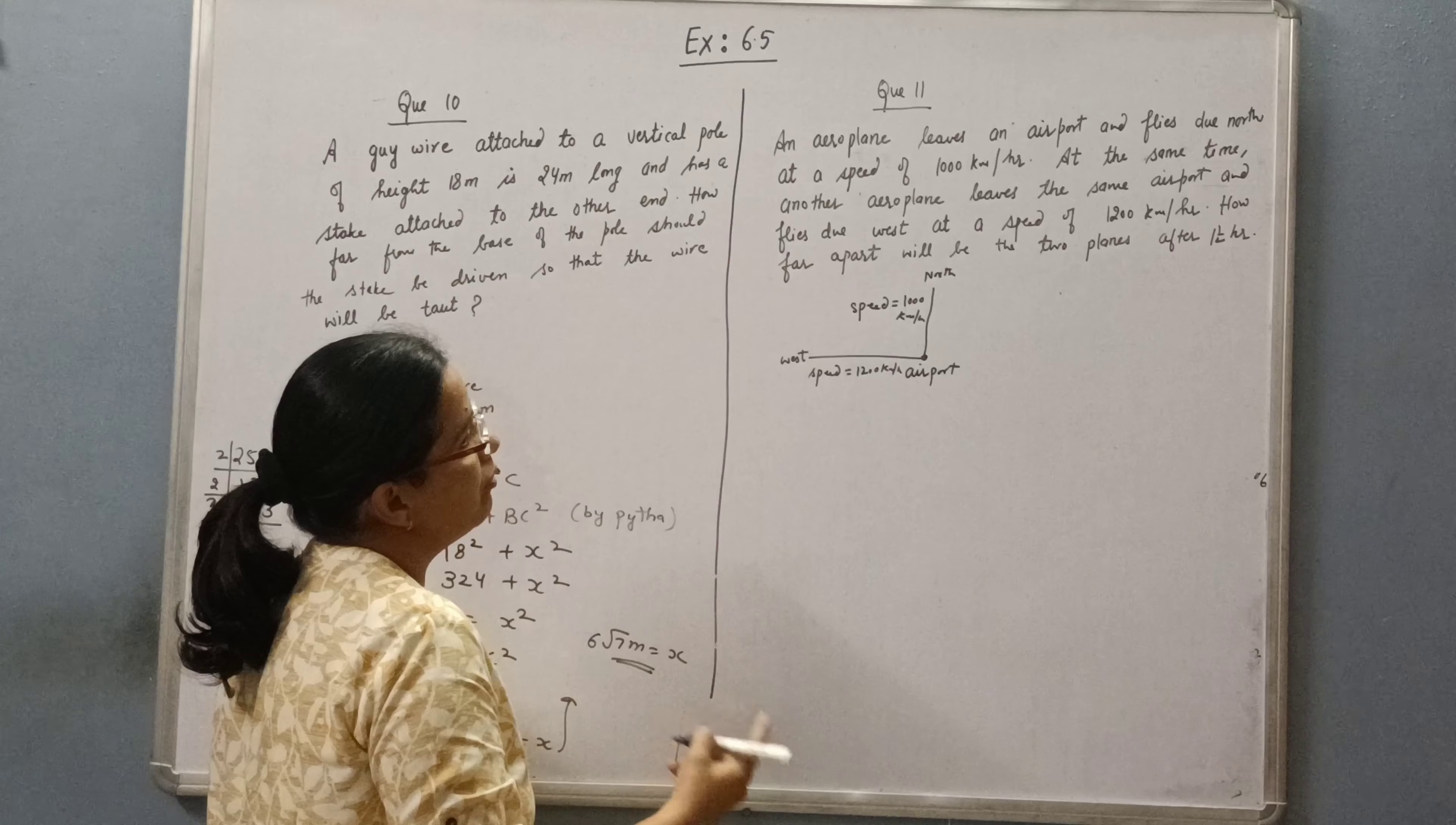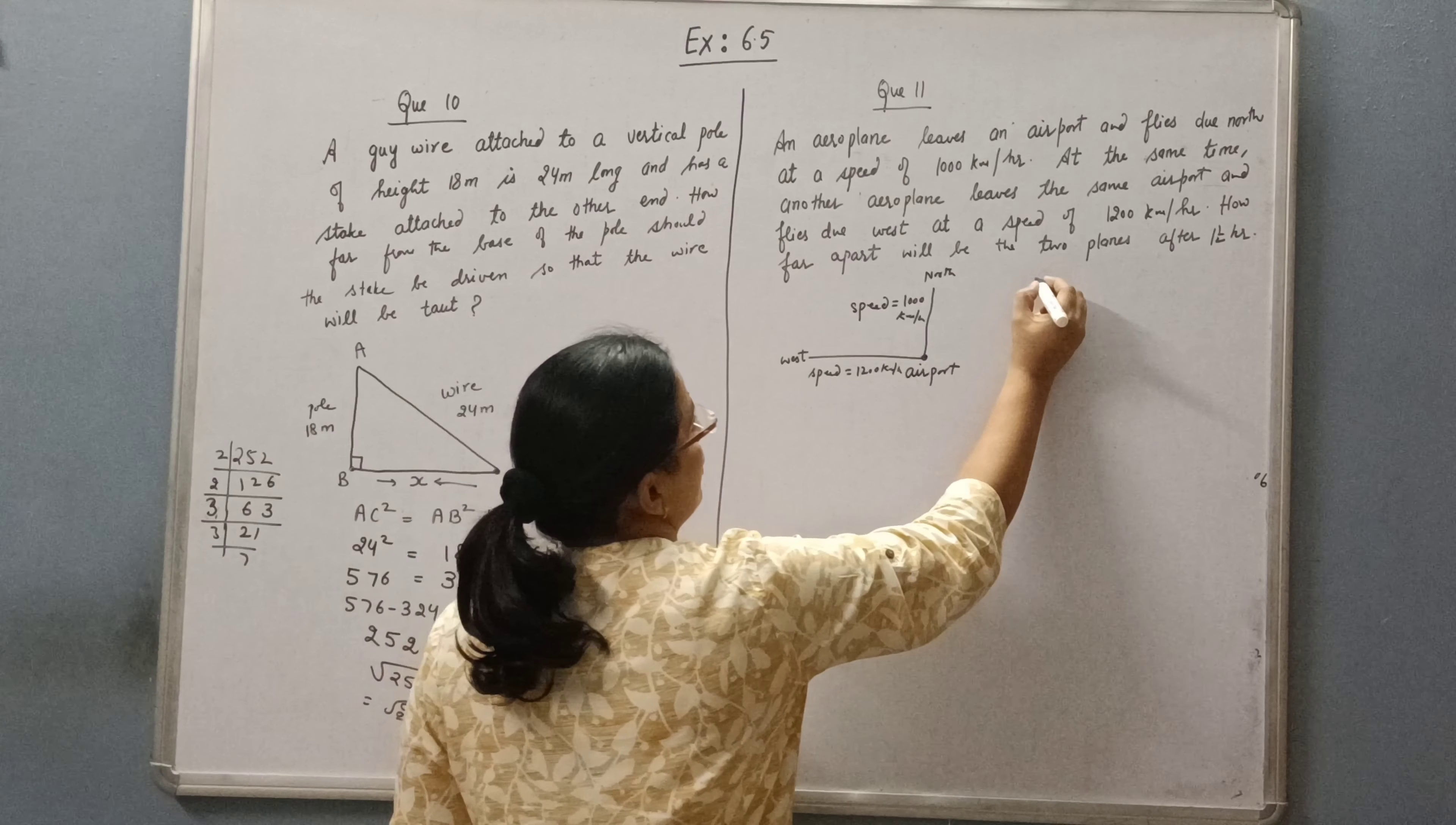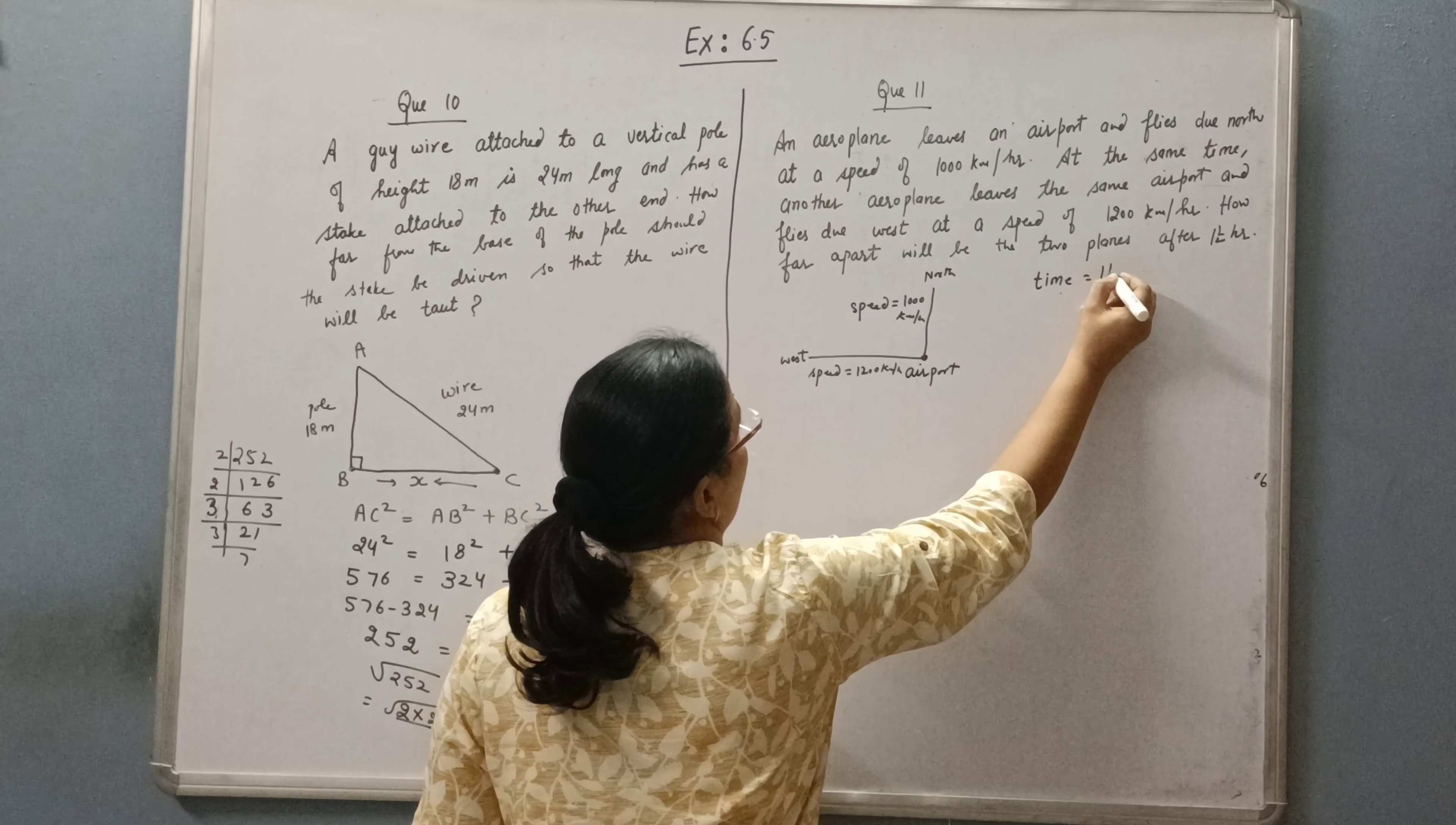At a speed of 1200 km per hour. How far apart will be the two planes after one and a half hours? So time given is one and a half hours, that is three by two hours.